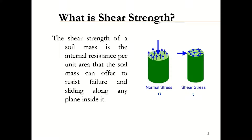There are two types of stress: one is normal stress and another one is shear stress. When we talk about the load coming from the superstructure, that is normal stress, and we often denote it by sigma. Whenever there is sliding, or one part of the soil is trying to move away from the other part, that is shear stress, which is generally denoted by tau. The shear strength of a soil mass is the internal resistance per unit area that the soil mass can offer to resist failure and sliding along any plane inside it.